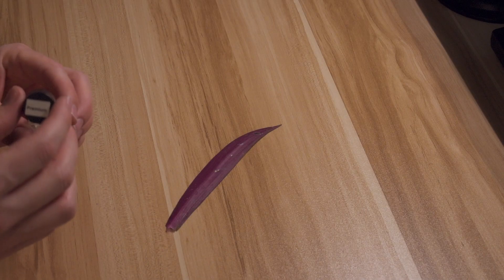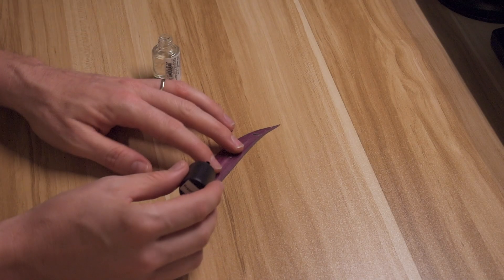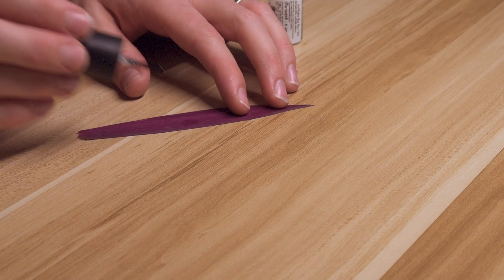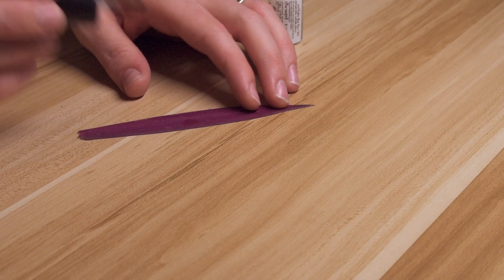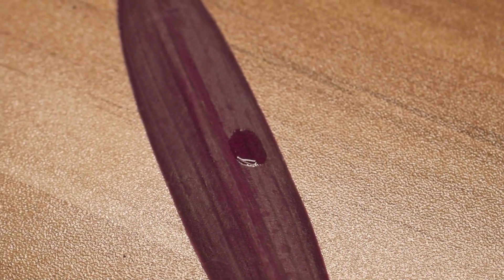First, we put clear nail varnish on the underside of the leaf. We only need a small patch. Leave it to dry for an hour or so,